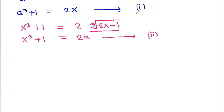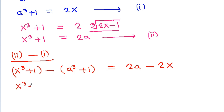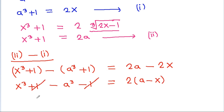If we subtract equation 1 from equation 2, then it will be x cubed plus 1 minus (a cubed plus 1) is equal to 2a minus 2x. That gives x cubed plus 1 minus a cubed minus 1 equals 2 times (a minus x). The 1s cancel, so x cubed minus a cubed is equal to 2 times (a minus x).